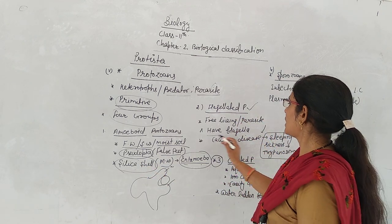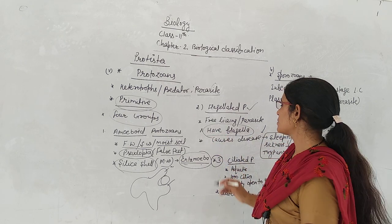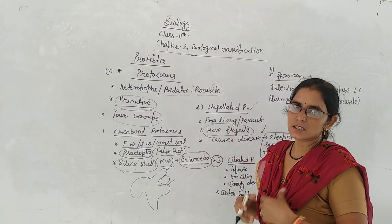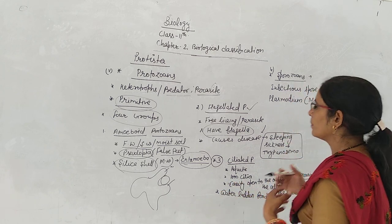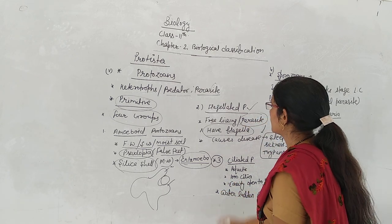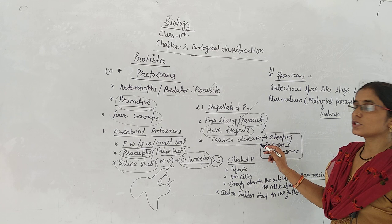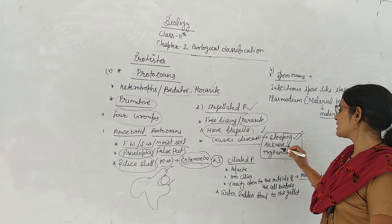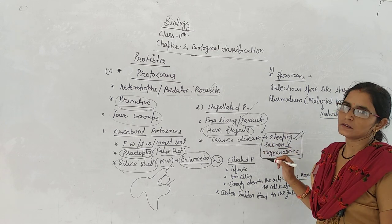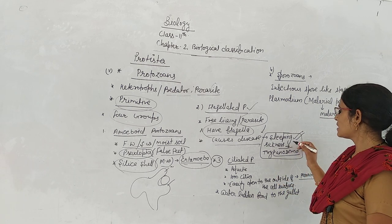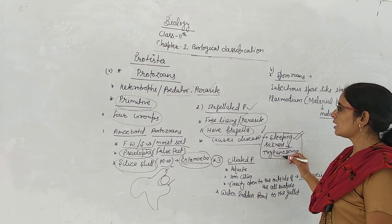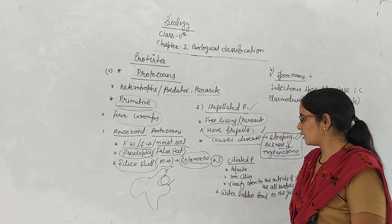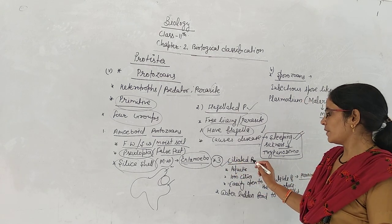Next is the flagellated protozoa. It can be free-living or may have different types of dependency. It also causes disease — sleeping sickness is caused by Trypanosoma, which is a flagellated protozoa.